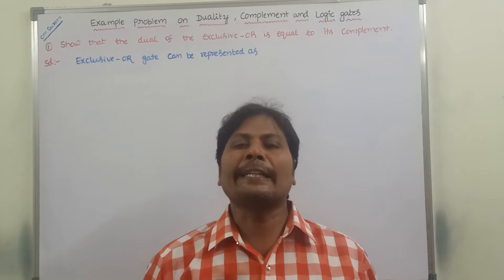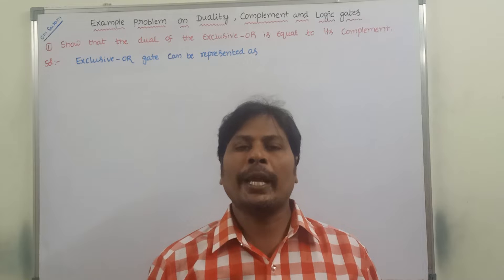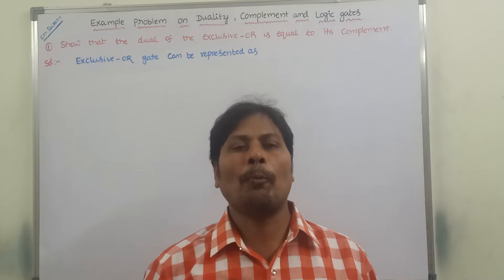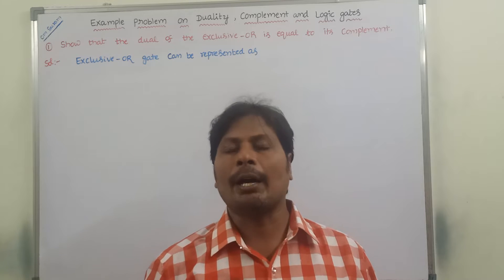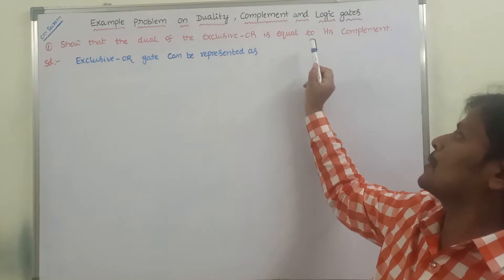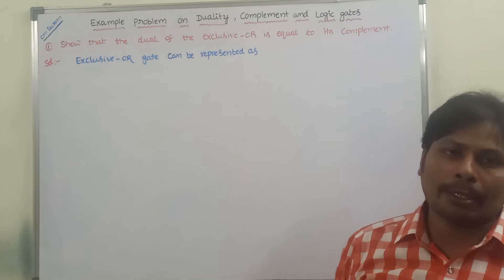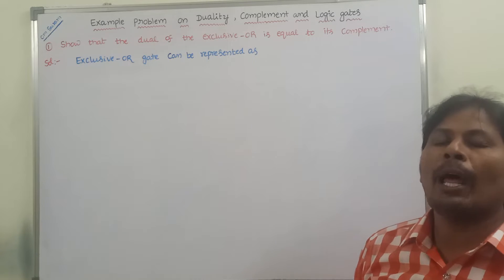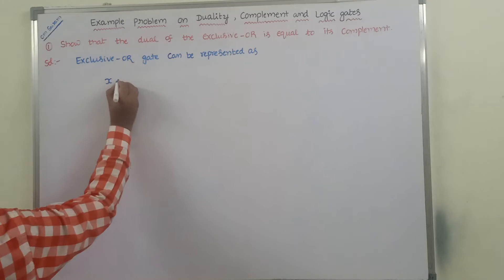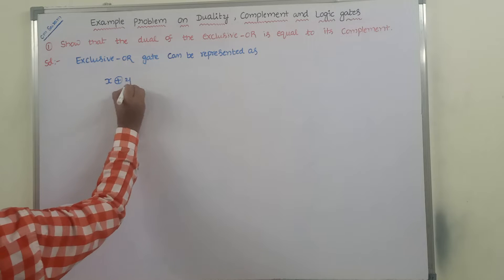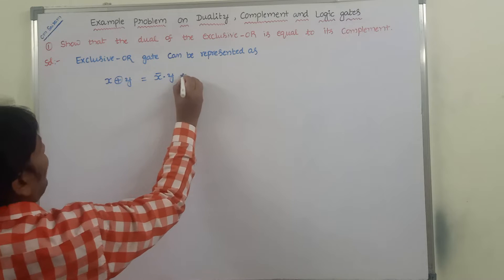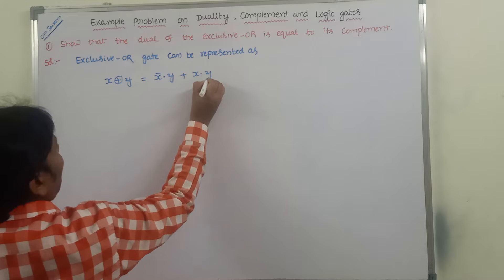Hi friends, welcome back to our YouTube channel. Today we have to discuss one of the most important example problems on duality, complement, and logic gates: show that the dual of the exclusive OR gate is equal to its complement. We know the formula for the exclusive OR gate — X exclusive OR Y can be written as X̄·Y + X·Ȳ.